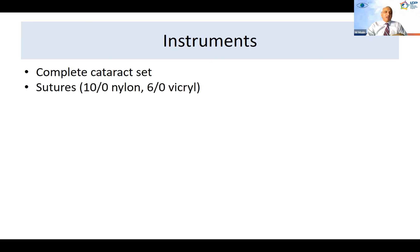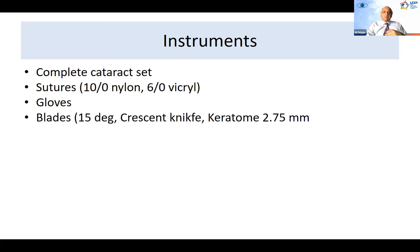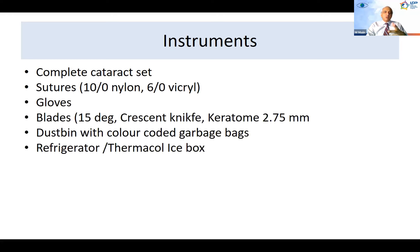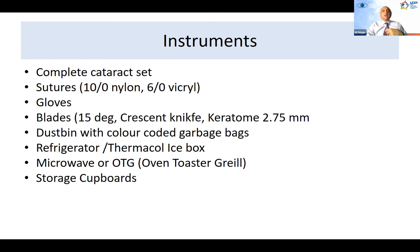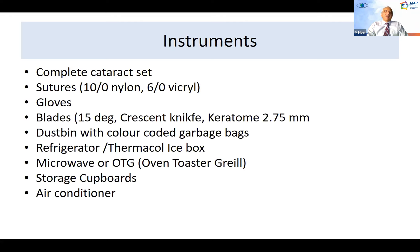So you need a complete set of cataract instruments. You need sutures — 10-0 nylon, which is your bread and butter. You need gloves, blades, a dustbin with color-coded garbage bags, a refrigerator, a microwave or oven toaster, and storage cover. You'll see later on why we need a microwave in a wet lab. And an air conditioner, obviously, to run in a comfortable setting.